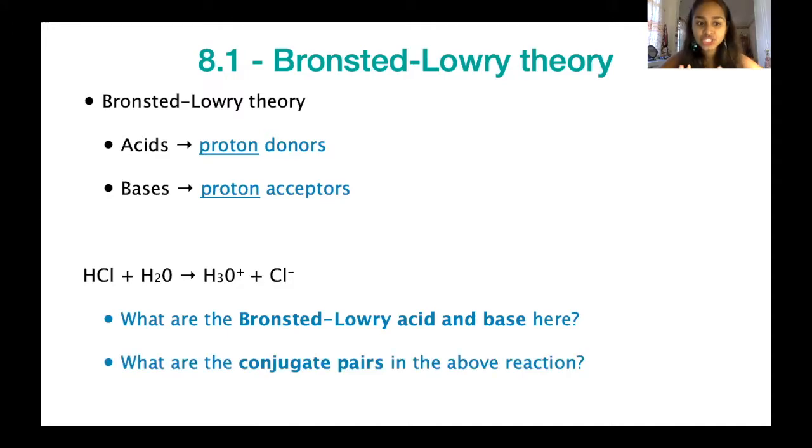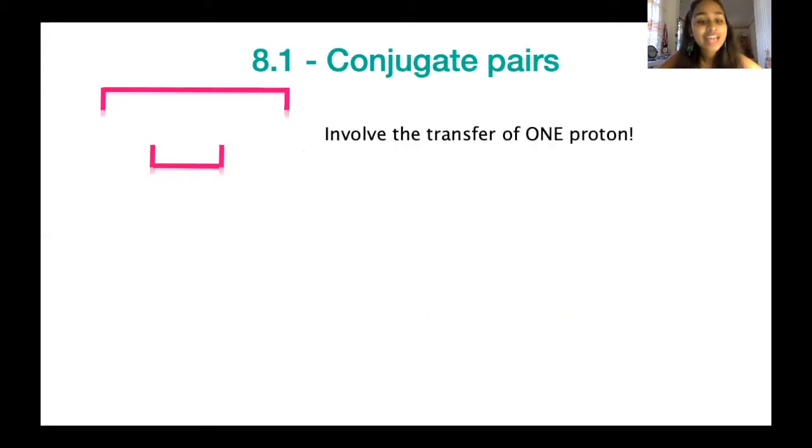There are two main questions you need to be able to answer based on a reaction such as this one. The first question is, what are the Brønsted-Lowry acid and base here? And the second one is about conjugate pairs. If we're talking about the acid first, remember, the acid is the proton donor. It's got a hydrogen that it wants to give. We're looking at the reactants, for which reactant has donated a hydrogen. In this case, you can see that HCl, hydrochloric acid, has donated its hydrogen, its H+, and therefore, it's become Cl-.